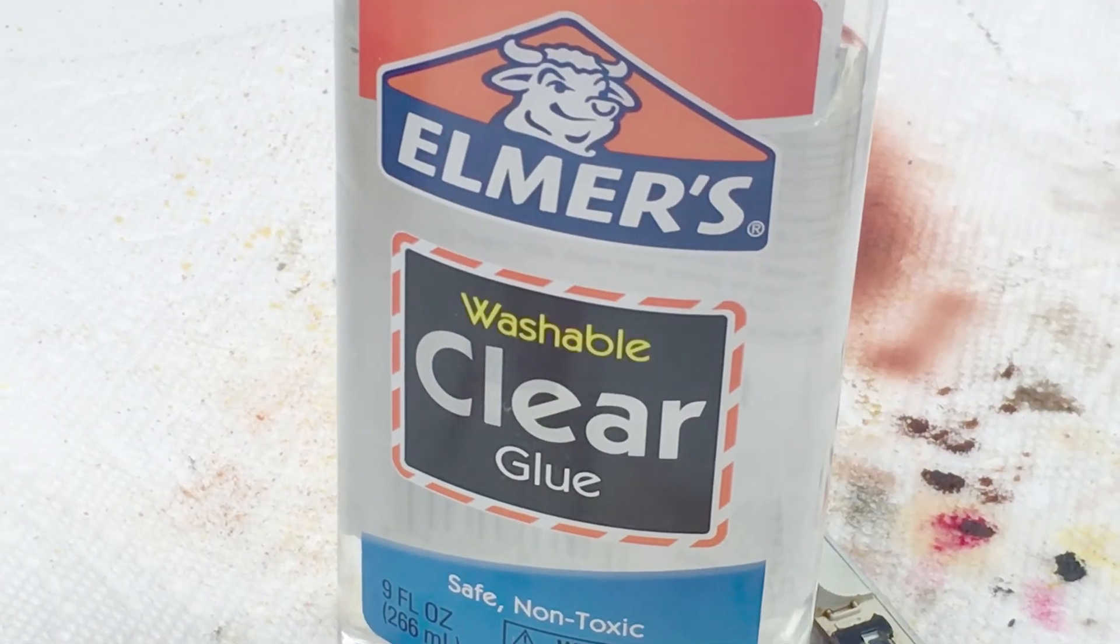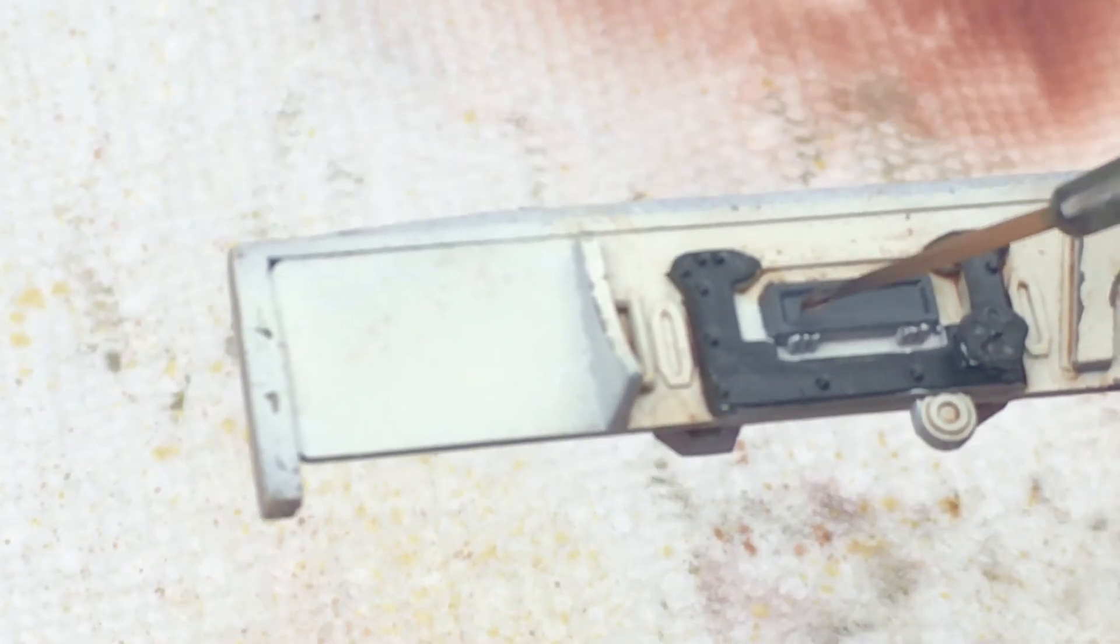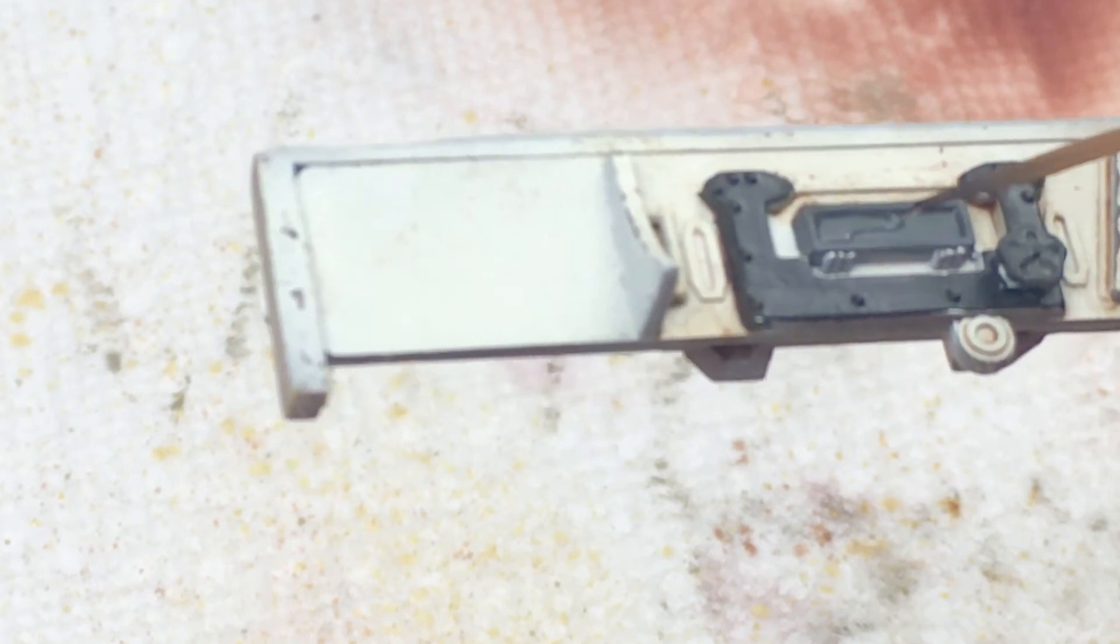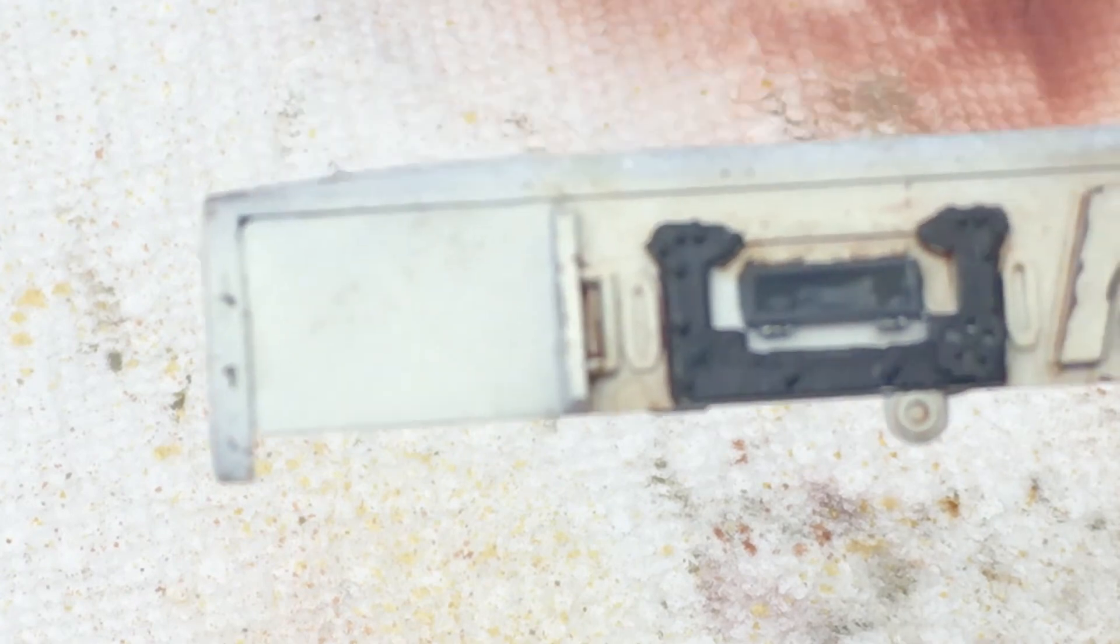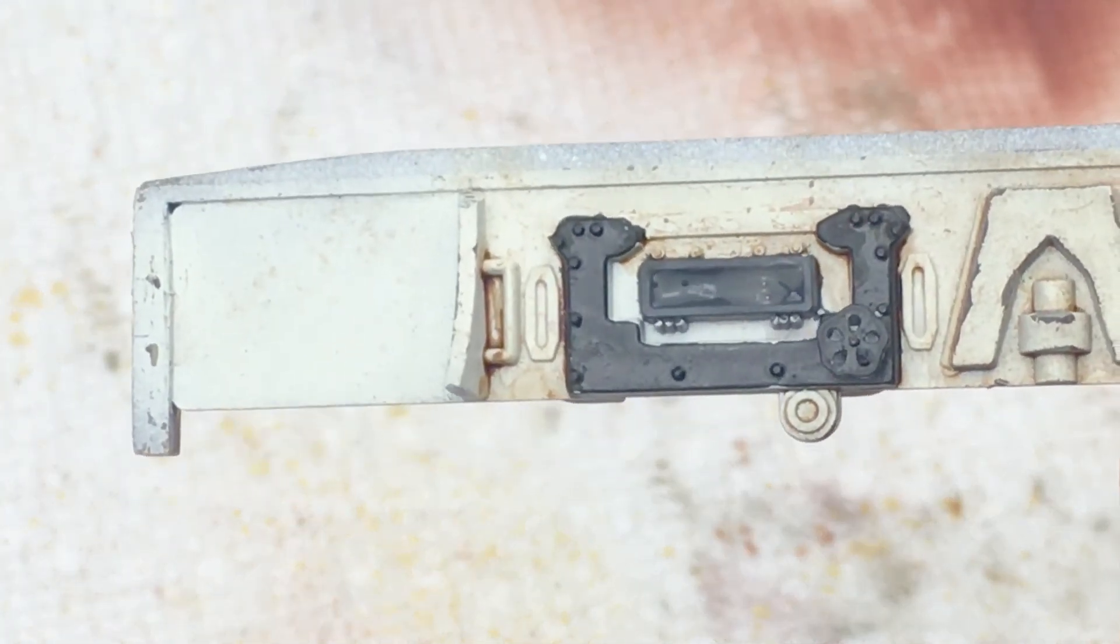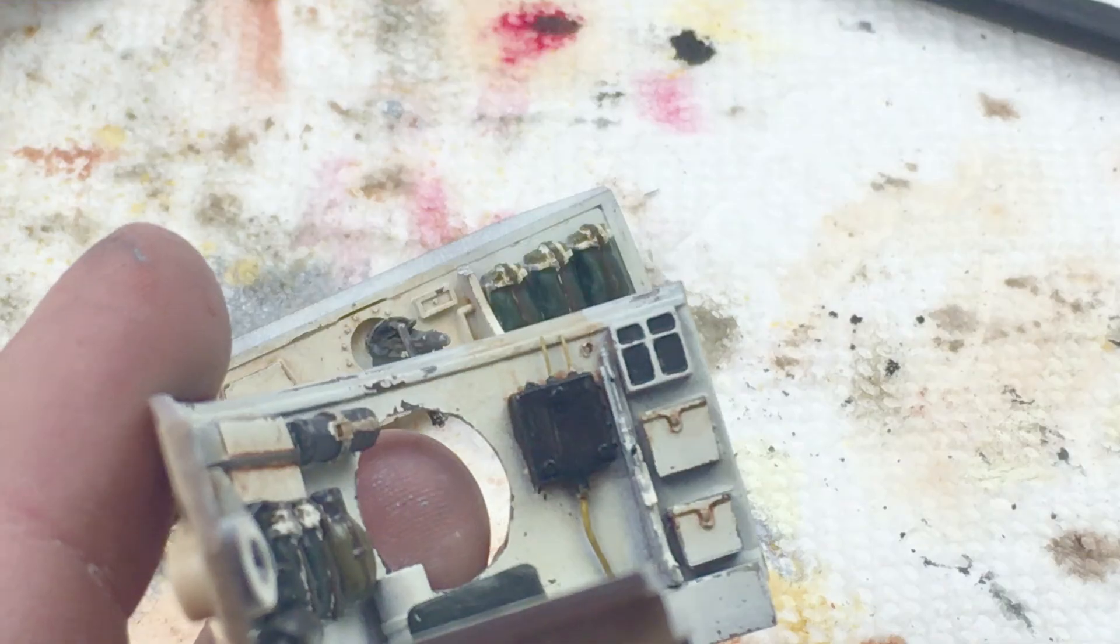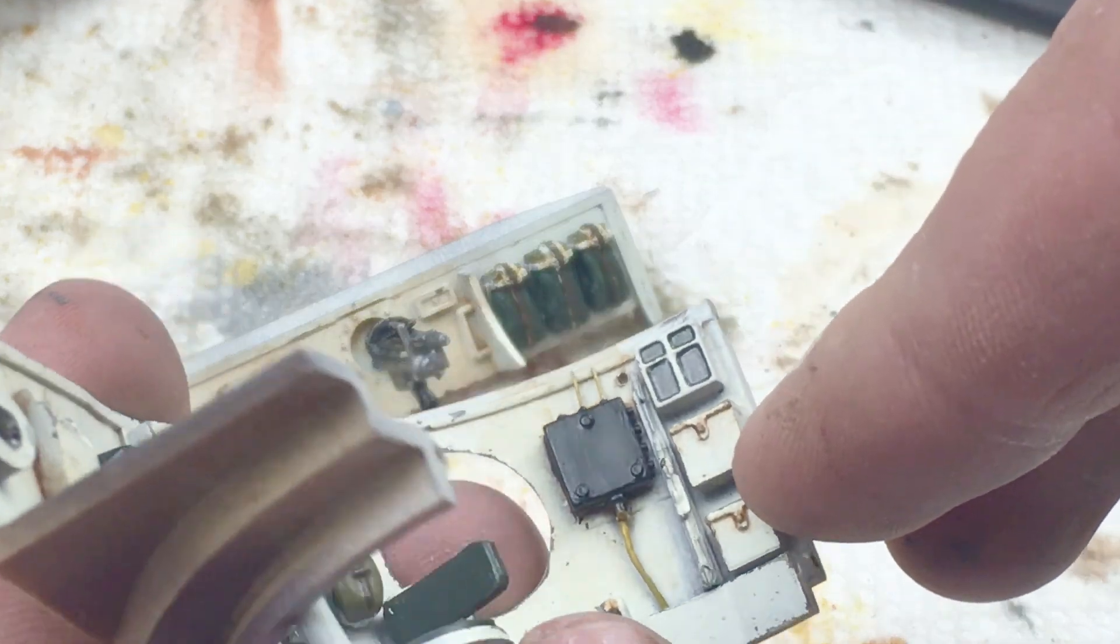For the next step I'm going to use Elmer's Washable Clear Glue. Now make sure it's clear and thin it down with water. Then cover each periscope with it, just the glass part, and you'll see that after it's dry it leaves a super glossy finish and looks like a wet effect or glossy effect, just is way cheaper and reactivatable if you don't like the result. As you can see it really does look good.